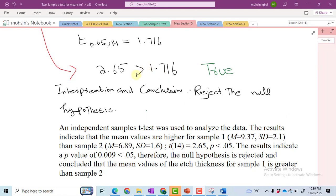2.65 is the test statistic, p less than 0.05. This probability has been calculated using software. The results indicate that the p-value of 0.009 less than 0.05 is obtained. Therefore, the null hypothesis is rejected, and we conclude that the mean value for edge thickness for sample 1 is greater than sample 2.